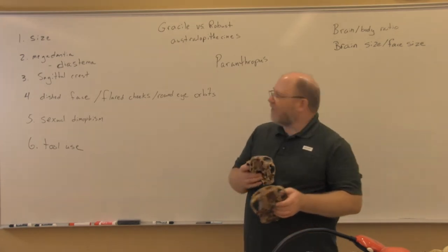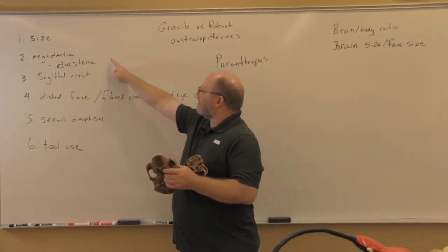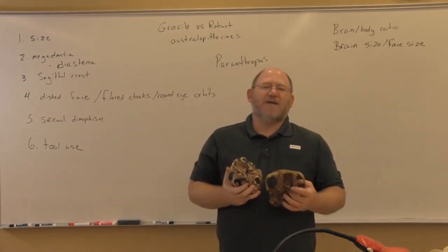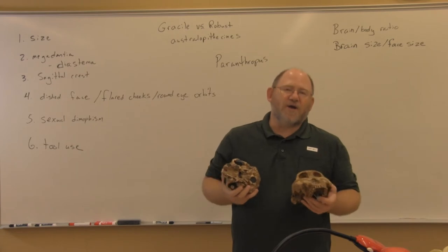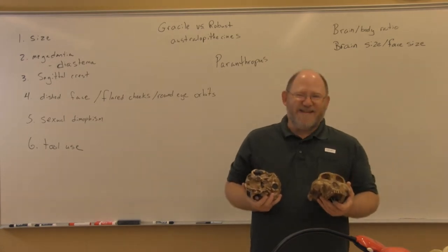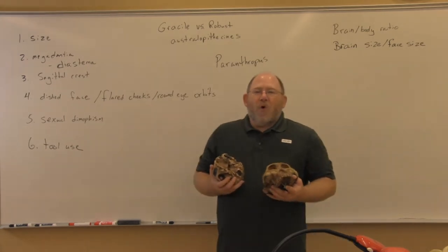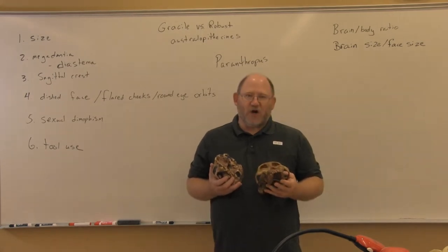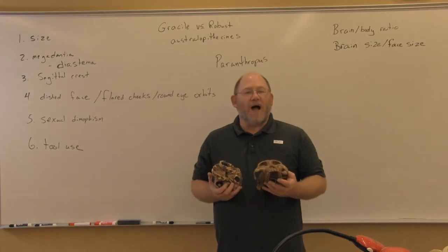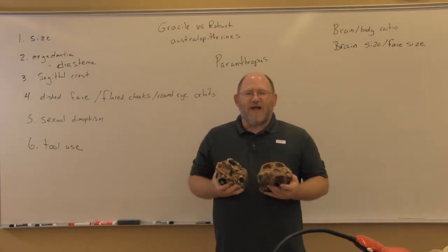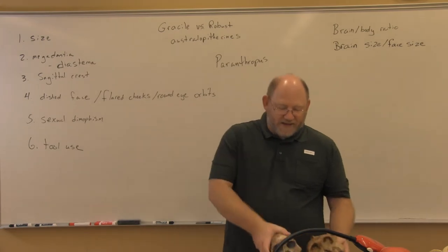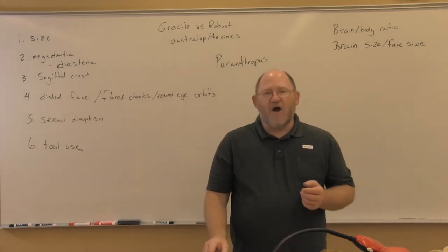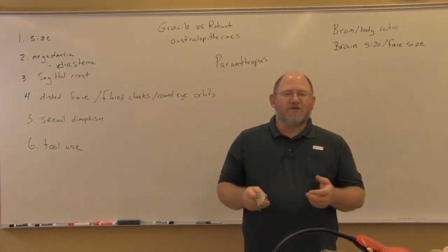The second broad characteristic is megadontia, which has to do with teeth. Both gracile and robust australopithecines have really large teeth compared to us. Gracile forms' molars — their back teeth — are much larger than ours.